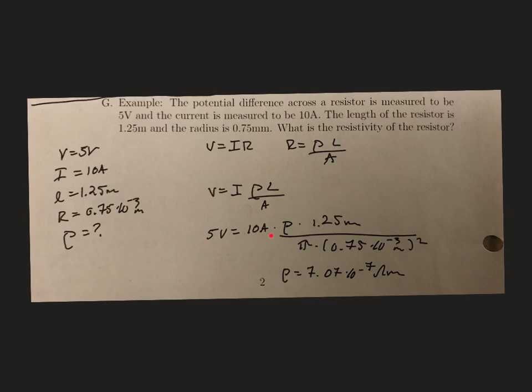Since I know the 5 volts and the 10 amps, and I know the length is 1.25 meters, and since I'm given a radius, that means we have a circular cross-sectional area. So we're going to do pi r squared, so pi times 0.75 times 10 to the minus 3 meters squared.